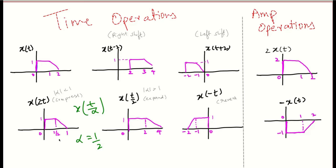An easy way to remember this: if x(t) is an audio tape, then x(2t) will be the audio tape being played at twice the speed, so obviously its duration will get halved. And x(t/2) will be the audio tape being played at half the speed, and if something is played at 0.5 speed, then obviously its length will double.